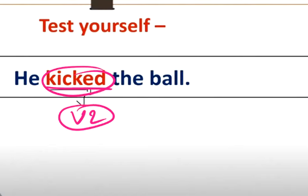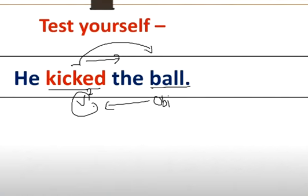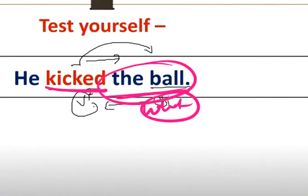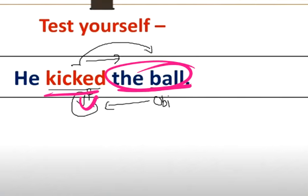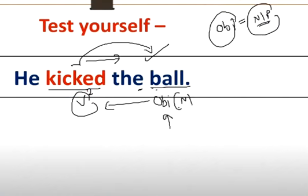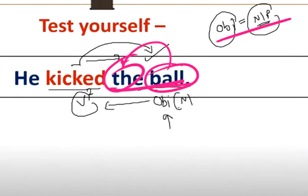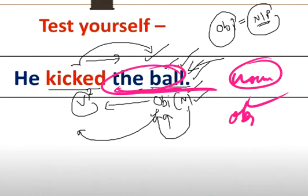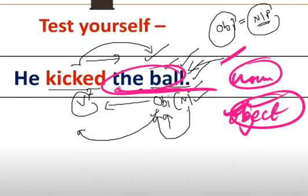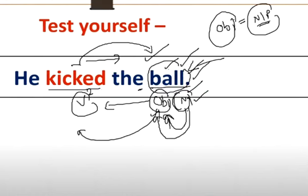Like 'he kicked the wall' - which form is the verb here? It is the main verb in its second form, so this is V2. Now, 'he kicked what?' - he kicked the wall. The answer to 'what' is 'the wall', so 'the wall' is the object. We know that an object is a noun or pronoun, and 'the wall' is a noun, so this is the noun object.